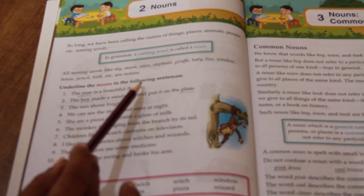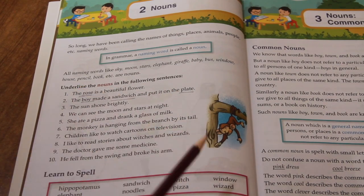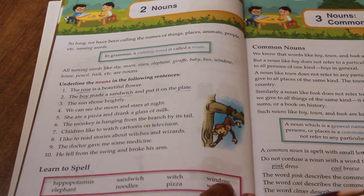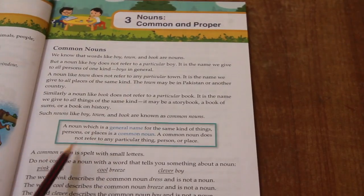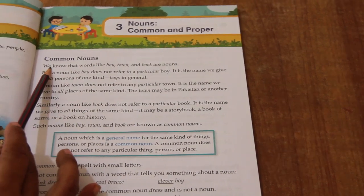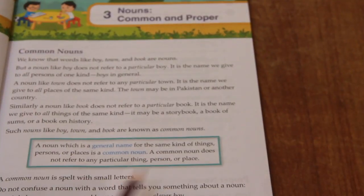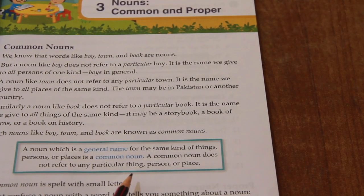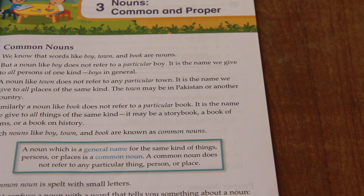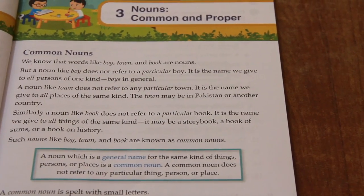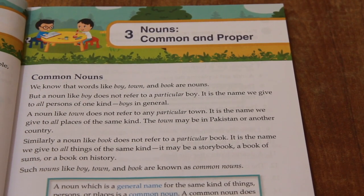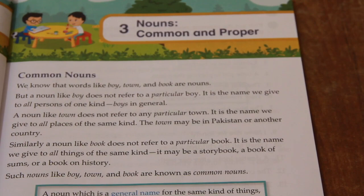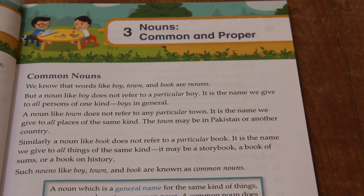Underline the nouns in the following sentences — that is the homework for class 2. Now open page number 3. Common nouns. Common nouns are nouns which give a general name for the same kind of things, persons, or places. A common noun does not refer to any particular thing, person, or place. A common noun is written with small letters.